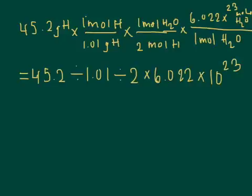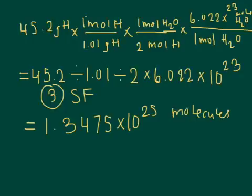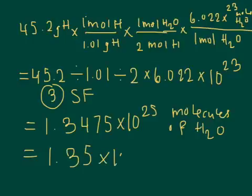So below here, I just wrote the numbers that you would plug into your calculator. And as you can see here, we have three sig figs from the 45.2. And the number that we get is 1.3475 times 10 to the 25th molecules of H2O. And if we apply the three sig figs to get its actual number, we get 1.35 times 10 to the 25th molecules of H2O.